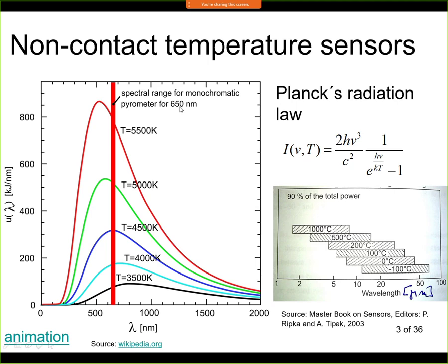The reason 650 nanometers is typically used is that this wavelength corresponds to red color, where our eyes are most sensitive. Monochromatic pyrometers are devices where you look directly into the optics and judge with your own eyes the intensity of the red color.